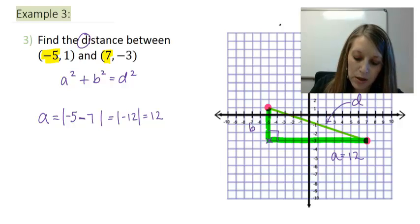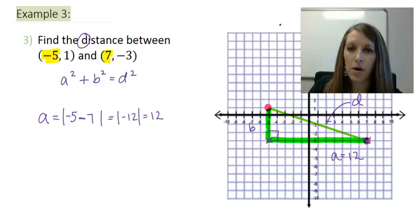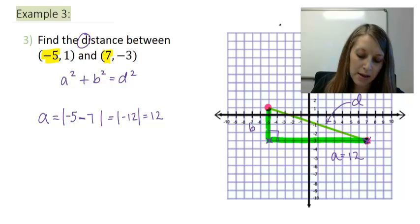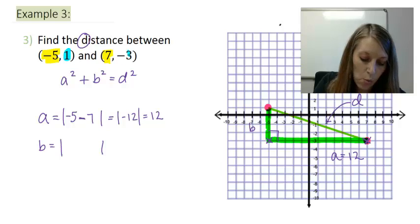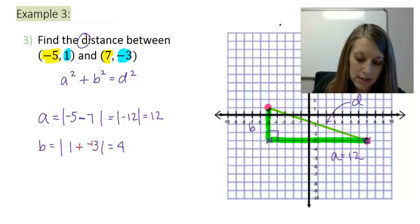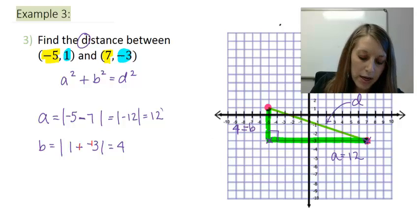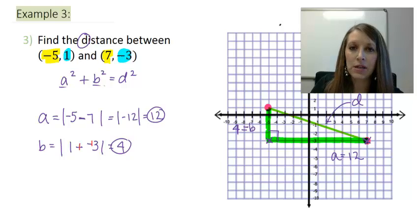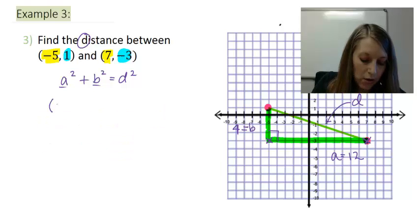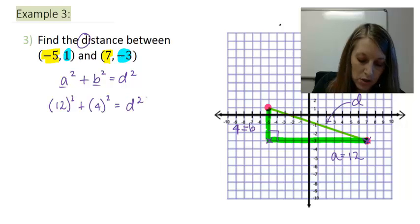So if I count the tick marks between these two points, there should be 12. To find my distance of B, same method: absolute value of one minus the other for my two y values, 1 and negative 3. So 1 minus negative 3 — the two negatives cancel out — giving me 4. The distance of side B is 4, and I can confirm that by counting 4 tick marks. So I just need to plug A and B in and solve for D. A is 12 squared plus B is 4 squared equals D squared.